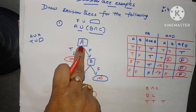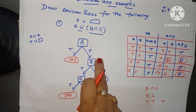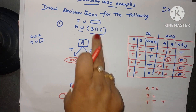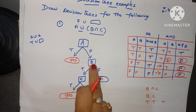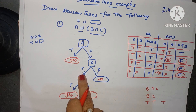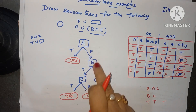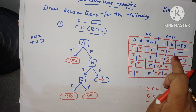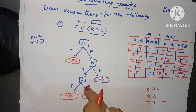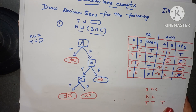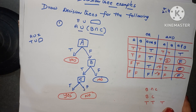To summarize: first we take condition A — either true or false. If true, true OR anything is true — YES. If false, then think about B. If B is false, false AND false is always false — NO. If B is true, then check C: if C is true, YES; if C is false, NO. This is a simple example of a Boolean function decision tree. I will explain more examples in the next videos. Thank you for watching. Please subscribe to my channel.